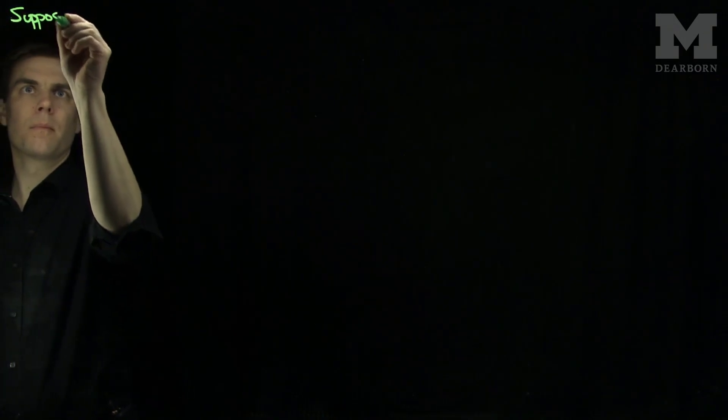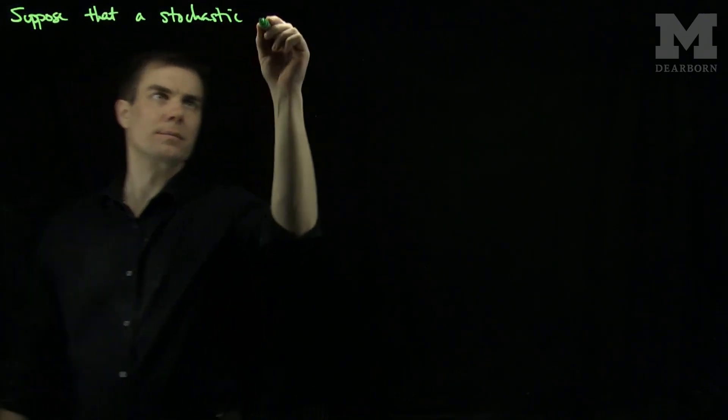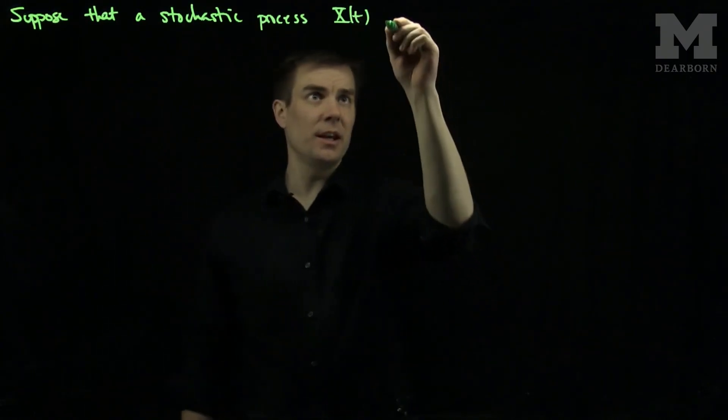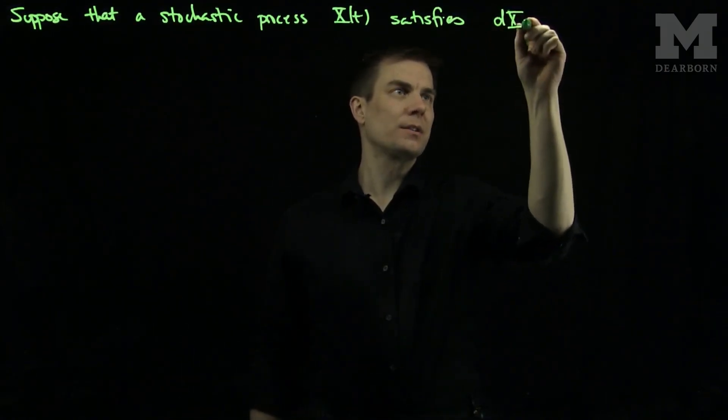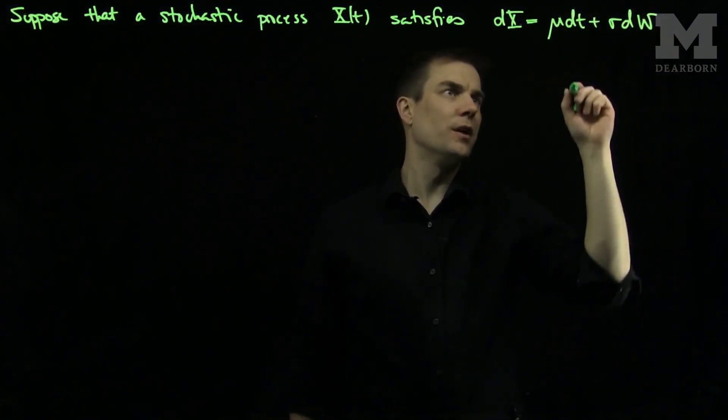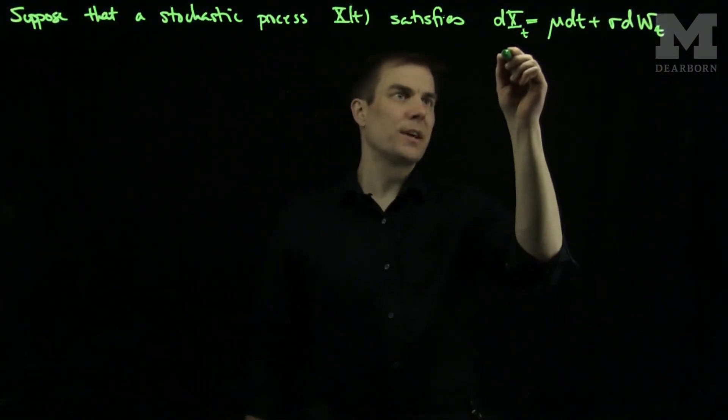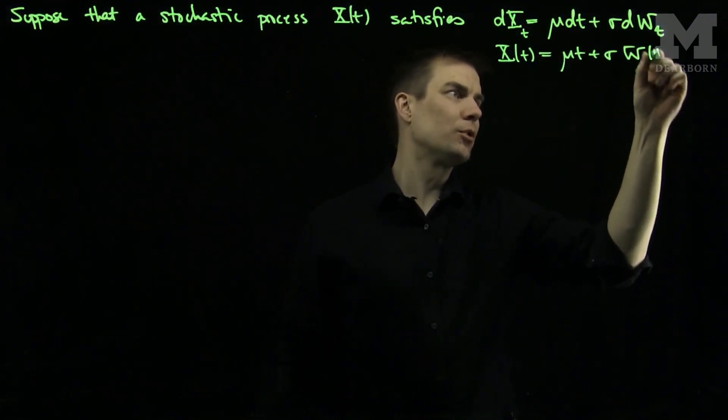Hello, students. In this video, we'll discuss the Itô Lemma. Suppose that a stochastic process x satisfies the SDE dx = μdt + σdw, and these are all at time t, and we know what the form of this process has to be. This says that x(t) will have to be μt + σ times Brownian motion at time t.